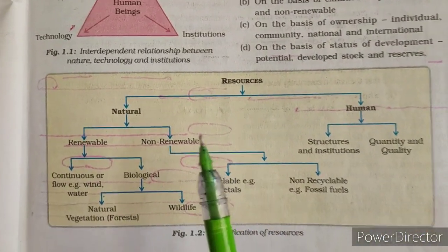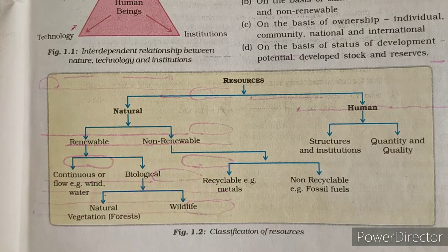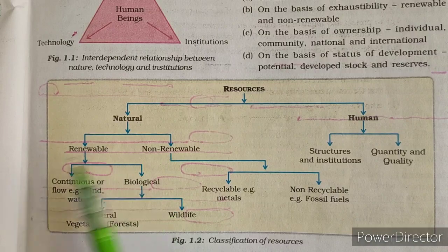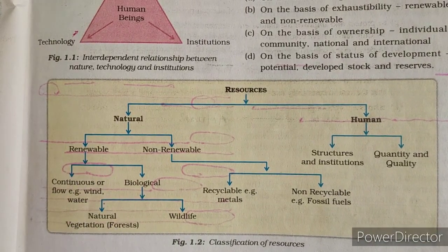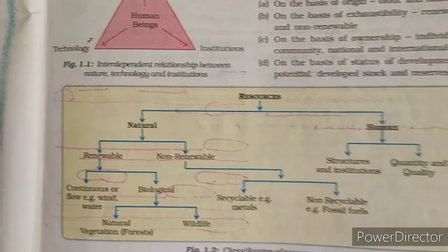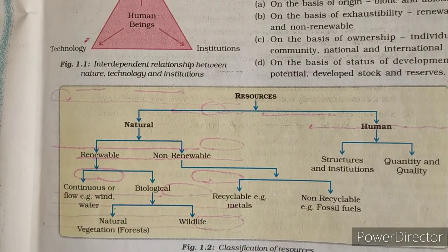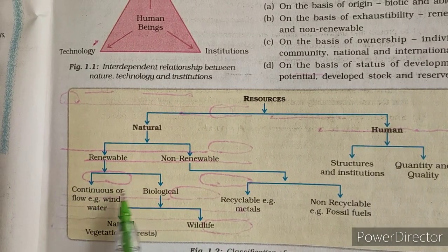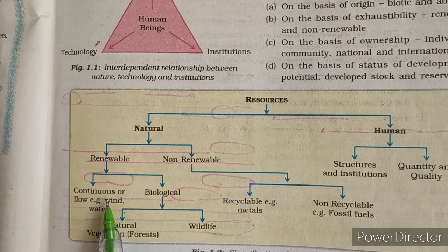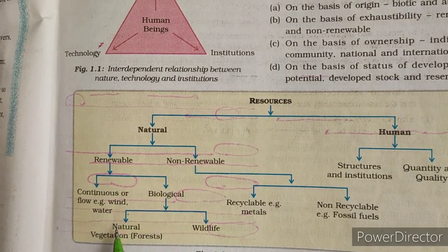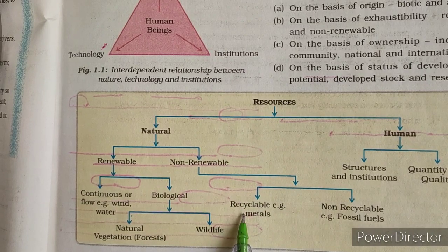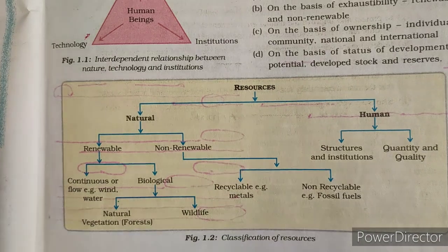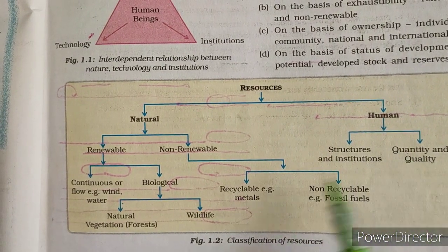Let us see this chart. Resources are classified as natural and human-made. Natural resources are divided into renewable — which we can renew — and non-renewable, which cannot be renewed. Renewable resources are further divided into continuous and biological; biological includes flora and wildlife. Non-renewable resources are recyclable and non-recyclable. Human resources include structures, institutions, quantity, and quality.